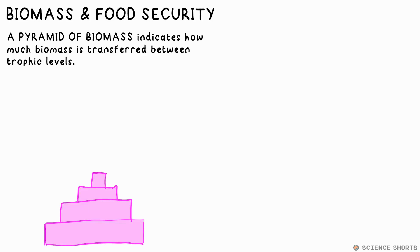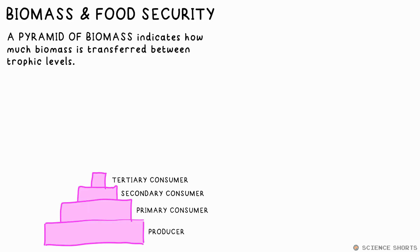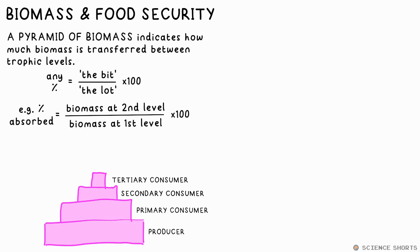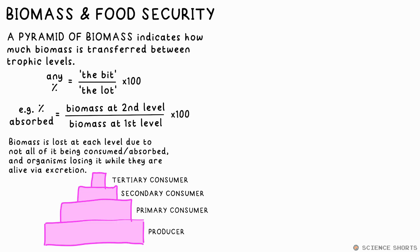A pyramid of biomass is a way of viewing a food chain which shows us how much mass enters the next trophic level, relatively. You need to be able to draw one on graph paper using numbers supplied in the question, and also calculate the percentage absorbed by the next level — any percentage is equal to the bit divided by the lot times 100. It's always a pyramid, showing that biomass is lost at each level, as not all biomass is absorbed or consumed into the next organism. Some is lost due to organisms living for some time before being eaten, having to move, excrete, and it's also lost as water, urea and CO2.